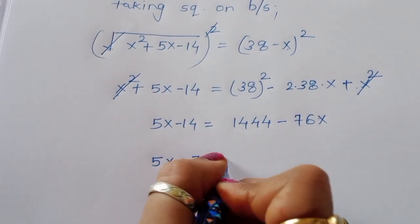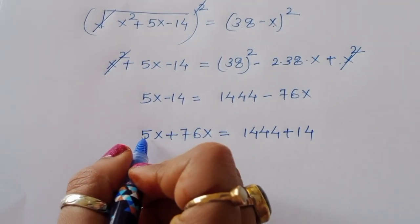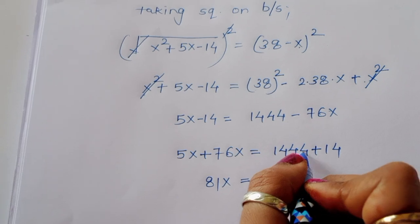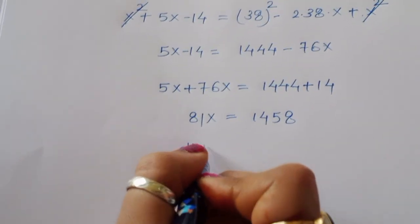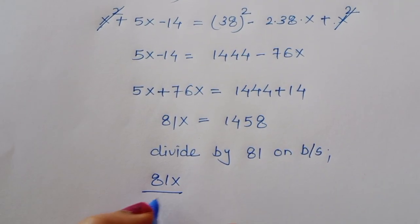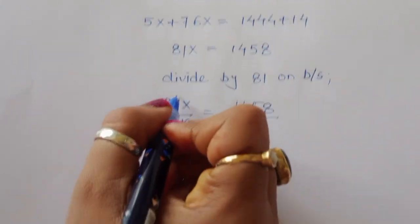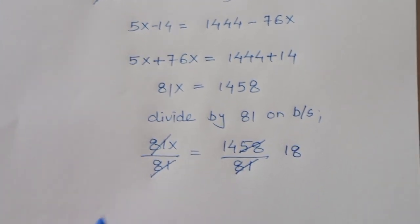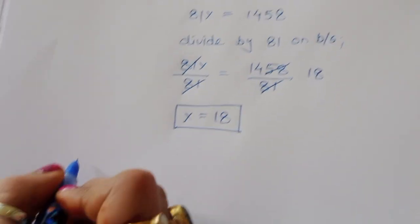So 81x = 1458. Dividing both sides by 81: x = 1458 ÷ 81 = 18. So the value of x is equal to 18. Now let's verify this is correct.